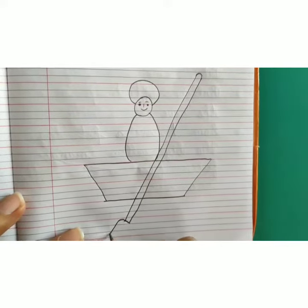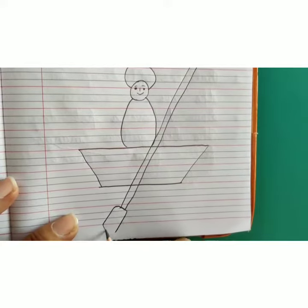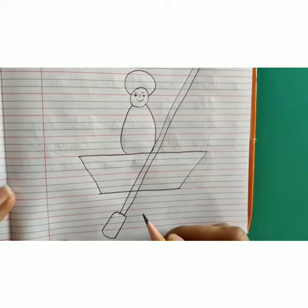Now we will draw standing line, standing line, half circle. This is a paddle.